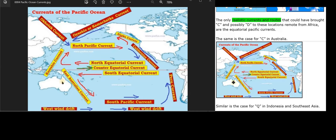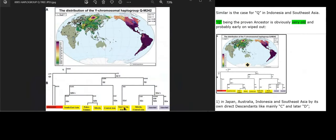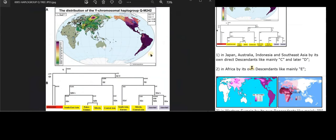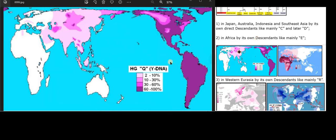Similar is the case for Q in Indonesia and Southeast Asia. Q being the proven ancestor is obviously very old and probably early on wiped out in Japan, Australia, Indonesia and Southeast Asia by its own direct descendants like mainly C and later D.